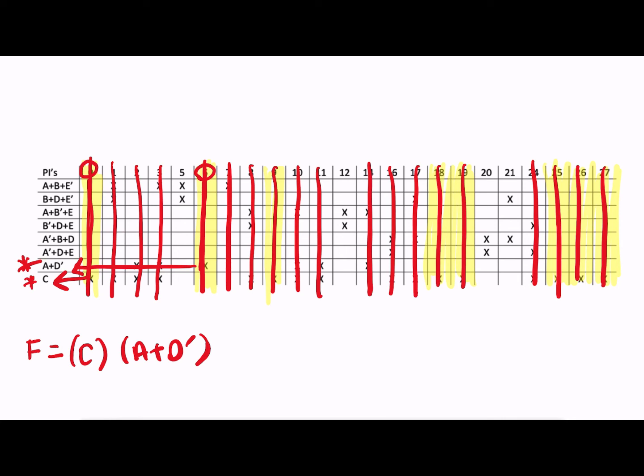We've got four more max terms left. So we need to deal with max terms 5, max term 12, max term 20, and max term 21. We'd like to find something that eats up as many of these as possible. And the only one that does that is going to be A prime plus B plus D. It's not essential, but it's the most efficient of our remaining prime implicants. So we're going to include that. And that's going to deal with 20 and 21.